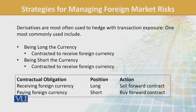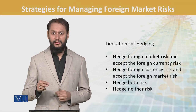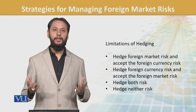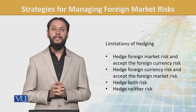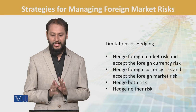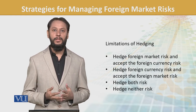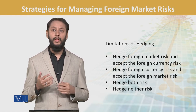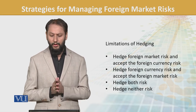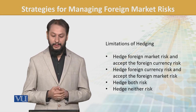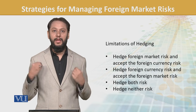Is ki kuch limitations hain. Aur plus humein dekhna hota hai ke how much we are willing to accept. Is pure paragraph ke baad you will be understanding two main categories mein humne use split kar diya: hedge foreign market risk and accept foreign currency risk, ya market ke risk ko aap hedge karo aur jo currency ka risk hai woh aap accept karo. Structure to structure vary karti hoti hai, aur costing aur us ki kya implication hai. Doosri option kya hai — currency ko hedge kar do aur market risk rehne do.